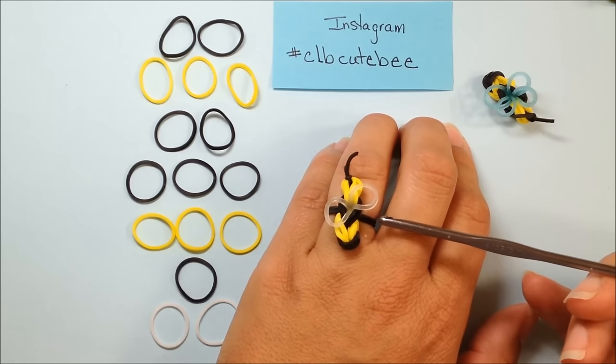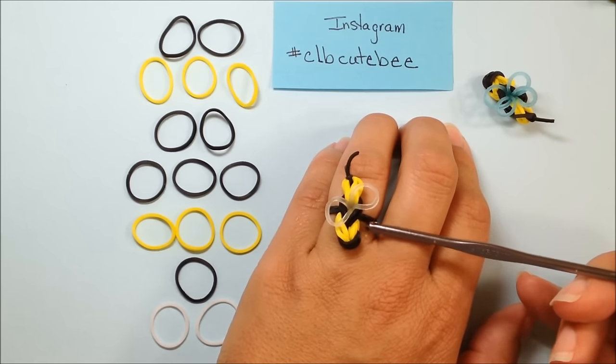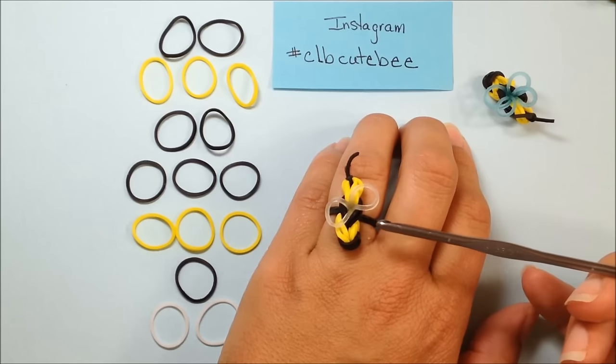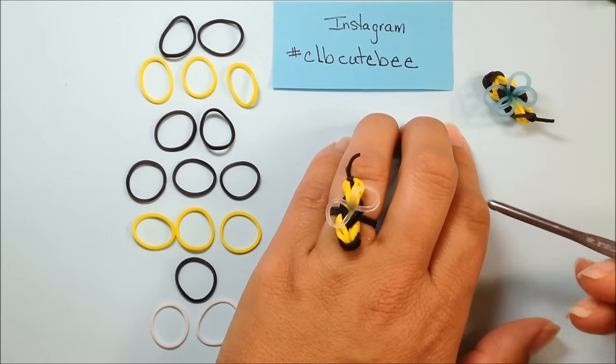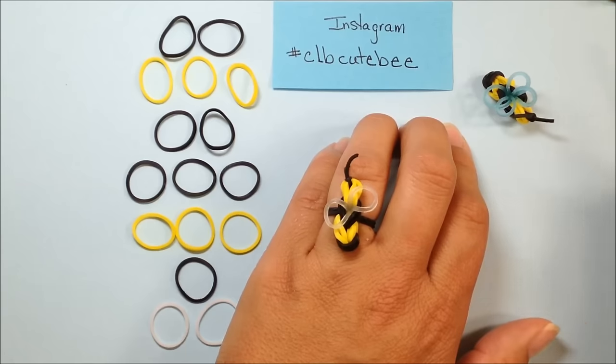There are a couple different steps that we need to do to make it a loomless ring which is different from the loomless bee that I previously have on my channel. So pay close attention because it is just slightly different.